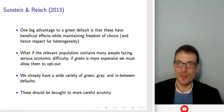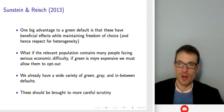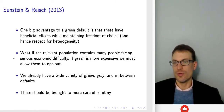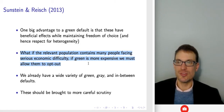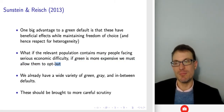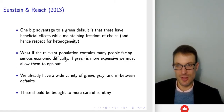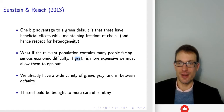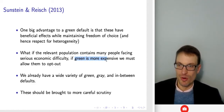One big advantage of the green default is that it has beneficial effects while maintaining freedom of choice and respecting that people are different. If people are able to opt out, they retain that ability. But what if the relevant population contains many people facing serious economic difficulty? What if green is more expensive? If green is more expensive, we absolutely must allow them to opt out. Under those circumstances, maybe you'd actually want to use a forced choice rather than automatically enrolling people in the more expensive option.